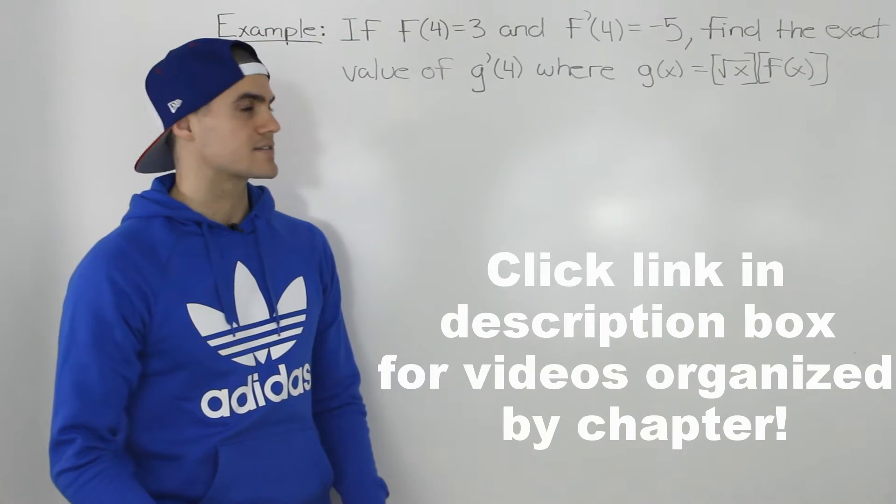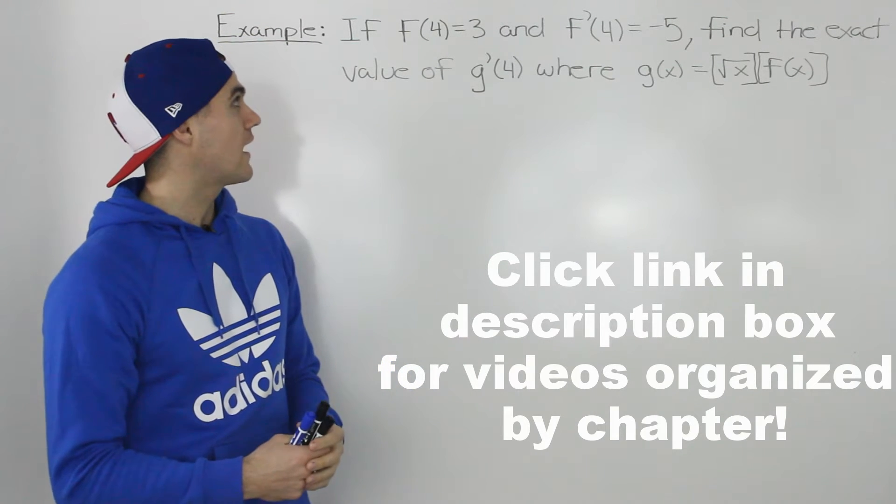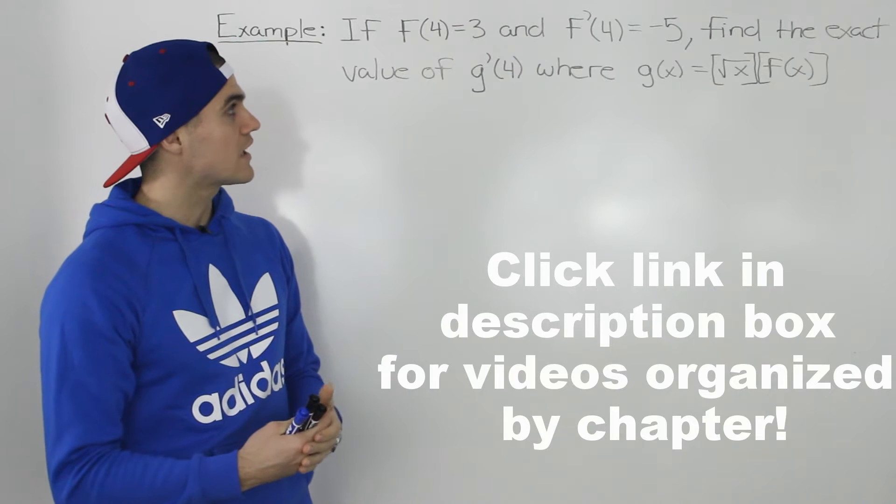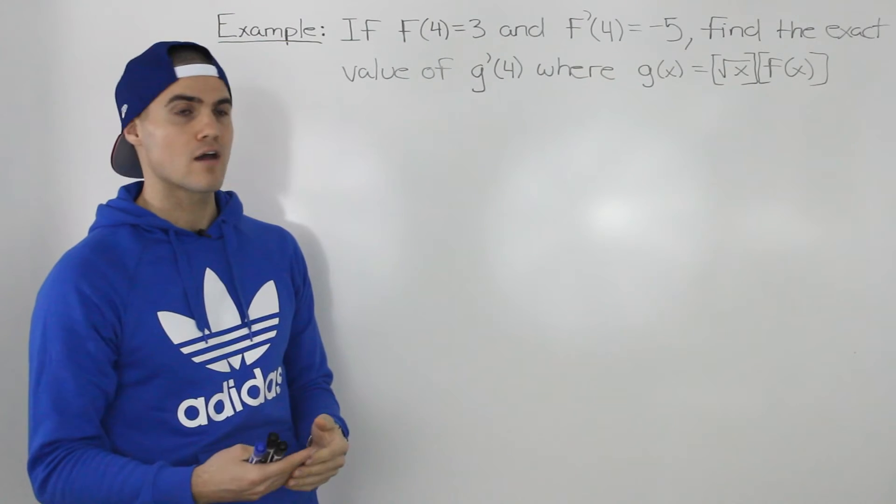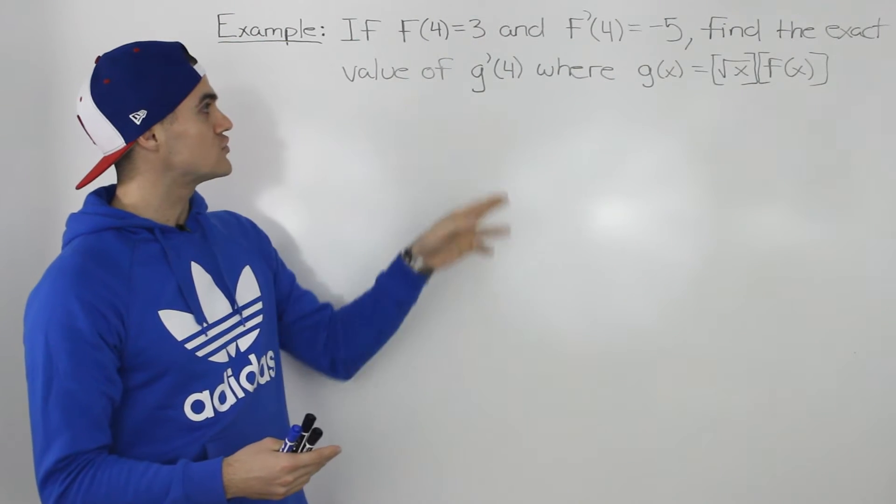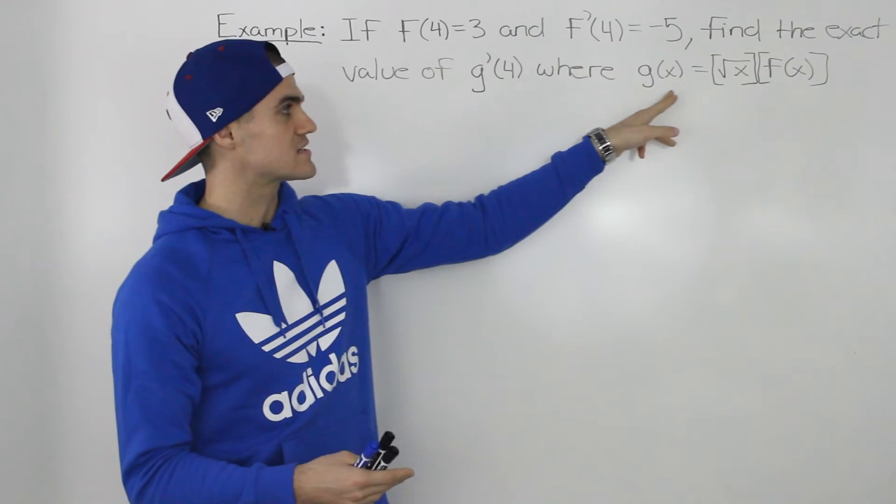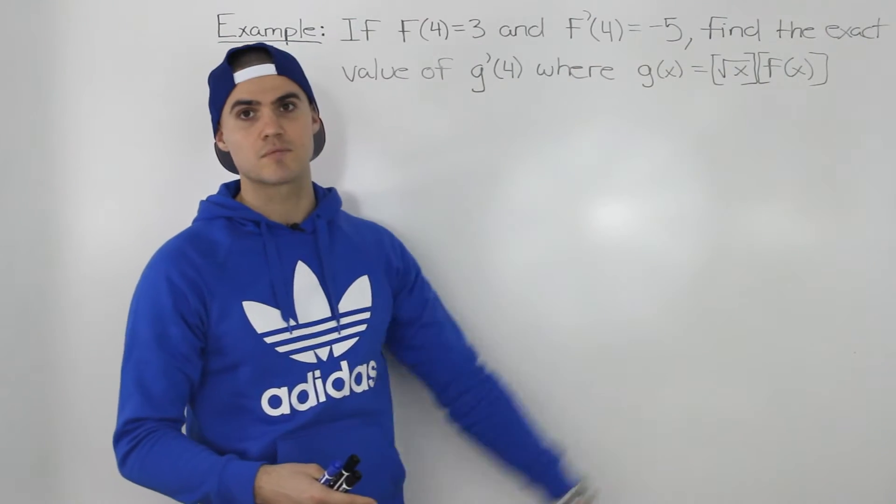Welcome back everybody. Moving on to the next example for the product rule, we have: if f(4) = 3 and f'(4) = -5, find the exact value of g'(4) where g(x) = √x · f(x).